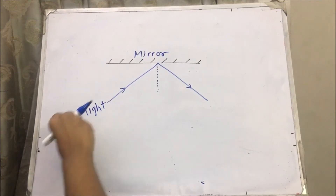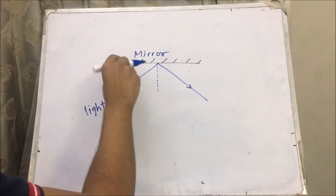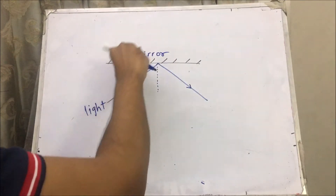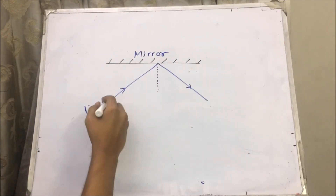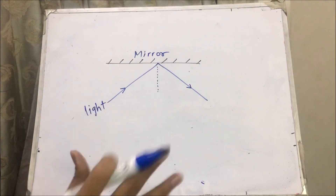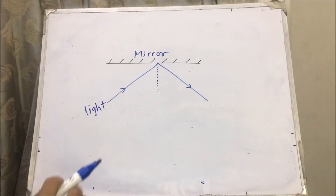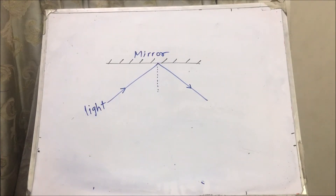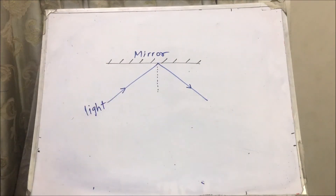Reflection. The light is coming like this and reflecting off the mirror like this. Here is your torch. The law about reflection is that the angle of incidence is equal to the angle of reflection. So what is the angle of incidence and what is the angle of reflection?